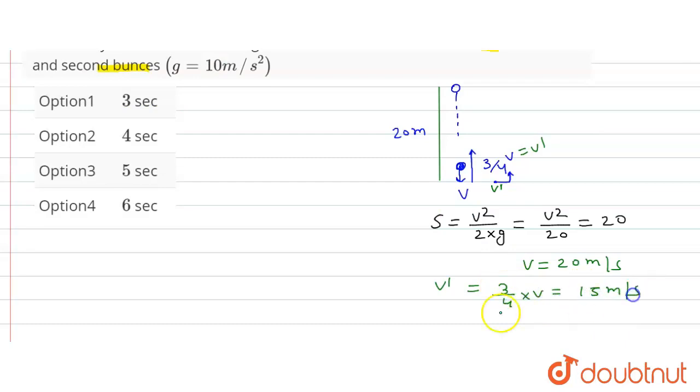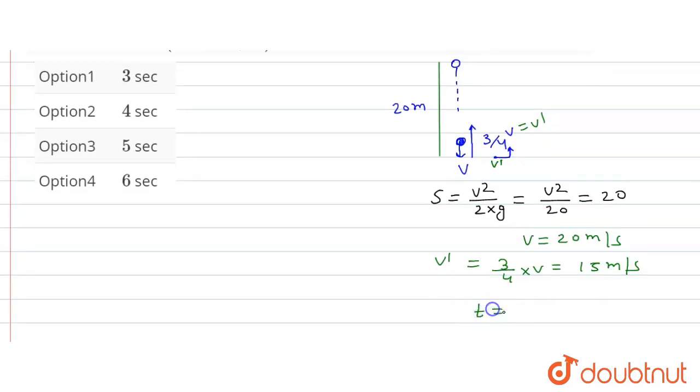Now time will be how much? This will be 2u by g, time of flight. That is equal to 2 into 15 upon 10, that is equal to 3 seconds.